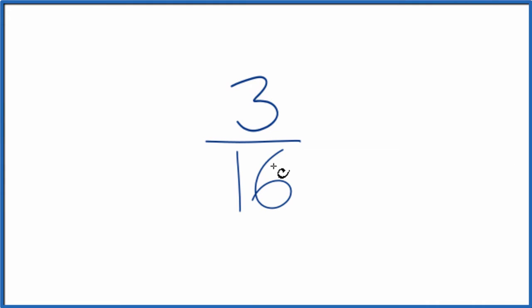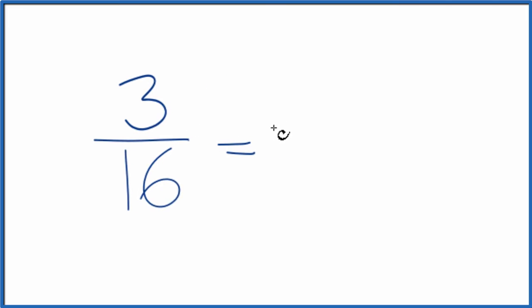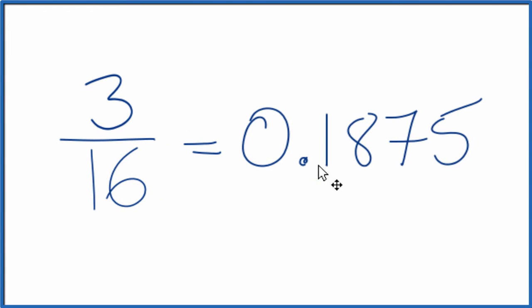Let's convert the fraction 3/16 to a decimal. So here's how we can do this. First, we could just divide 3 by 16 on our calculator. When we do that, we get 0.1875. So the fraction 3 over 16 equals the decimal 0.1875.